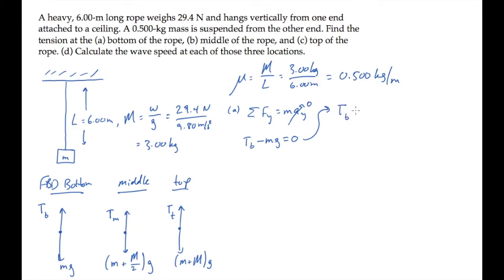For the point at the bottom of the rope, we find that the tension equals the weight of the hanging mass, that's 4.90 newtons.